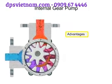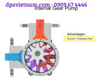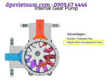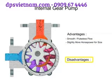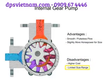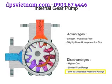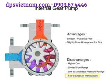Advantages of internal gear pumps are a smooth and almost pulseless flow and slightly more horsepower for its size. Disadvantages are its higher cost, limited size range, low to moderate pressure ratings, and few sources of manufacture.